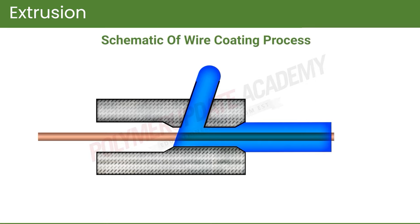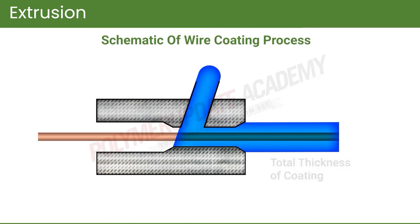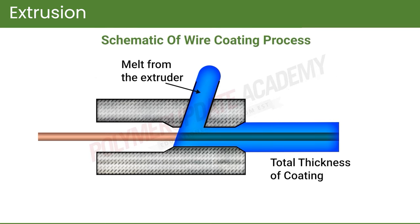The coating gets cooled after it comes out of the die. The amount of material to be coated depends on the total thickness of the coating, and that much material has to be supplied by the extruder so that the exact amount of material is pumped into the die.